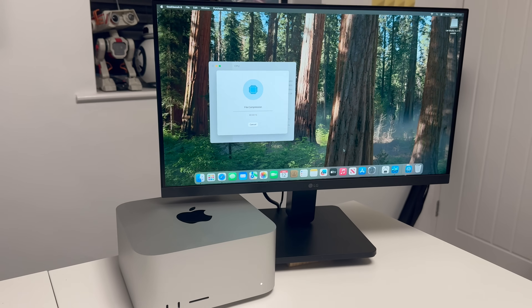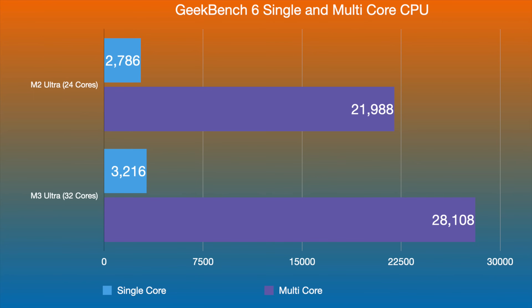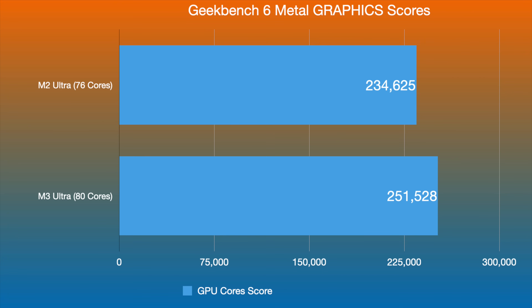Looking at Geekbench, comparing M2 Ultra to M3 Ultra and M4 Max, the results are very close. Even single-core performance — yes, the M3 Ultra is a little bit ahead — but looking at multi-core performance, we've got 21,988 versus 28,000. There's just not a lot in it, which is quite disappointing. Moving to Geekbench Metal graphics scores: the 76-core M2 Ultra scores 234,000 versus 251,000 for the 80-core M3 Ultra — there's obviously some improvement, but not much.